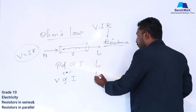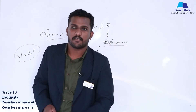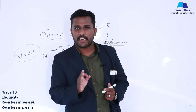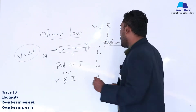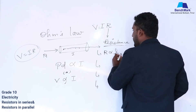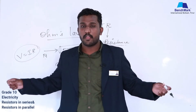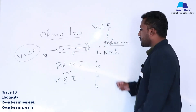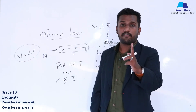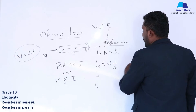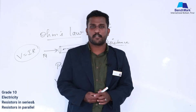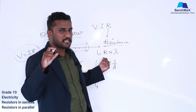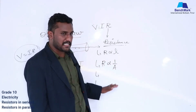Resistance mainly depends on four factors. First, if the length of the conductor increases, resistance will also increase — resistance is directly proportional to length. Don't use lengthy wire at home because more length means more resistance and less current. Second, resistance is inversely proportional to the area of cross-section: if area increases, resistance decreases; if area decreases, resistance increases. Using a thick wire means more area, less resistance, and more current.